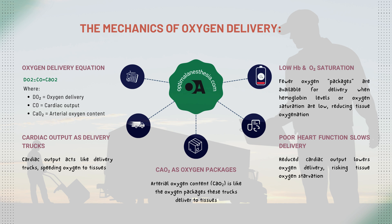But oxygen doesn't just need a ride — it needs to be delivered right where it's needed. This is where the oxygen delivery equation comes into play: cardiac output times arterial oxygen content. Imagine cardiac output as the speed of delivery trucks, and CaO2 as the packages of oxygen they're carrying. If the trucks slow down or carry fewer packages — whether due to low hemoglobin, reduced oxygen saturation, or poor heart function — then the tissues might go hungry for oxygen.